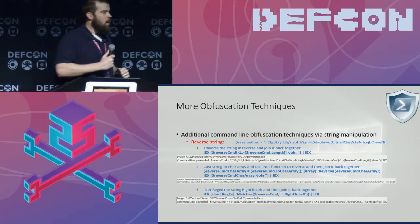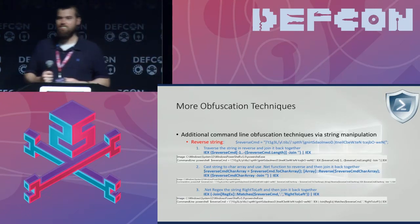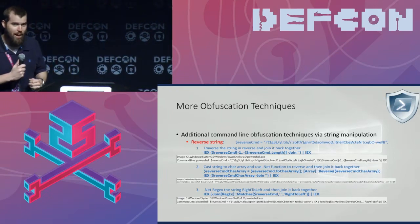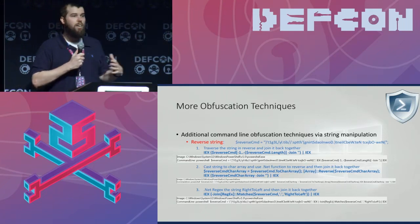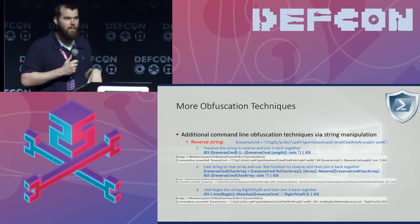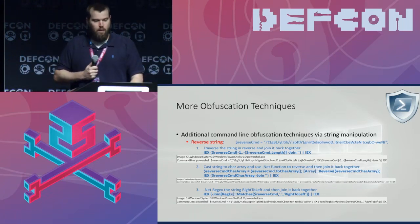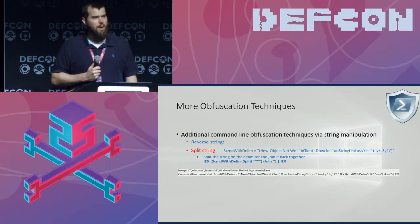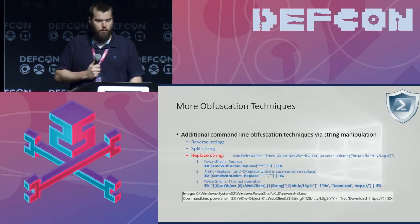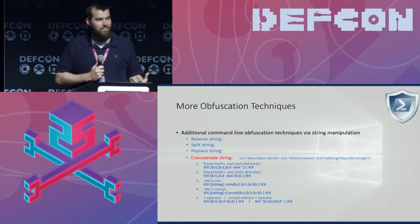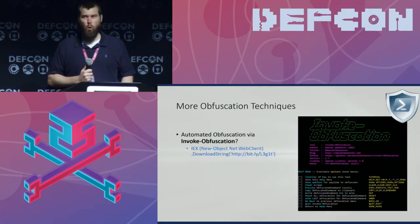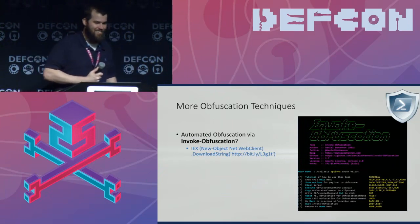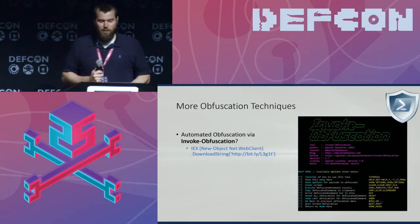What if we take an already heavily obfuscated PowerShell command and then make it a string, reverse it on the command line, and have it reversed back in memory? You can also put garbage delimiters in the command and then split and join to remove them, use replace methods to remove garbage delimiters, or do any kind of concatenation. Invoke-Obfuscation may or may not do all of that for you automatically.